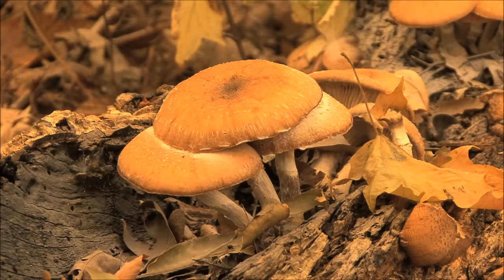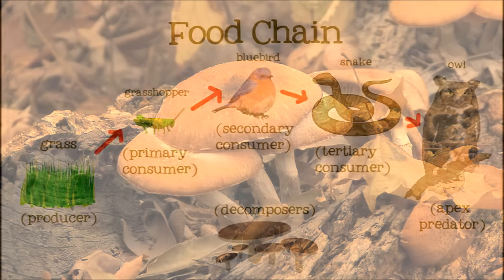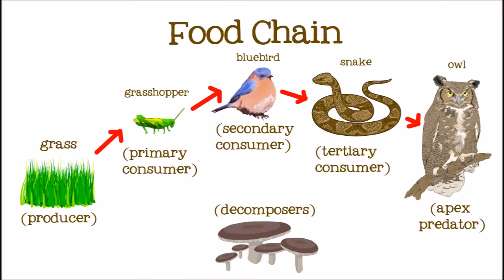When an animal dies, their body is broken down by decomposers. Decomposers are usually bacteria and fungi that break down dead plants and animals into nutrients in the soil, that in turn help the plants at the beginning of the food chain to grow. It's the circle of life!